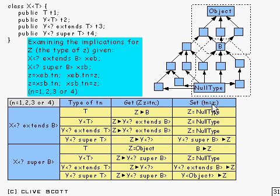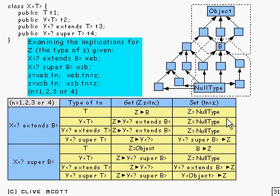Now over to the set side. TN is equal to Z — we're setting, so Z must be a subtype of TN. Starting with T where T is something which extends B, so T lies somewhere in the lower box. Is there a type which is a subtype of every possible choice for T? Yes — it's the null type. What about Y of T? The only thing which could possibly be a subtype of any type in here is the null type again. Similarly for Y of something which extends T: we can't guarantee anything about the structure, so the only subtype for any possible arrangement is the null type.